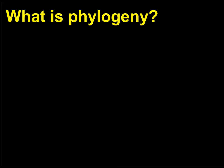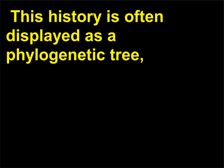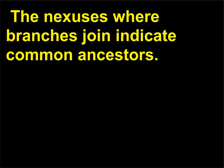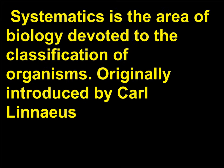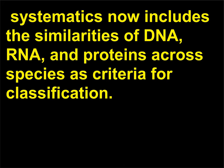What is phylogeny? Phylogeny is the evolutionary history of a group of species. This history is often displayed as a phylogenetic tree, in which individual species or groups of species are listed at the end of the branches. The nexuses where branches join indicate common ancestors. Systematics is the area of biology devoted to the classification of organisms, originally introduced by Carl Linnaeus, 1707-1778, who based his classification system on physical traits. Systematics now includes the similarities of DNA, RNA, and proteins across species as criteria for classification.